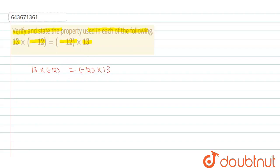We are using here commutative property. Commutative property is being used here, according to which a × b will be equals to b × a.